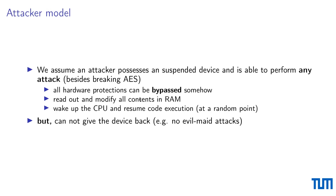Let's quickly recap our attacker model before going into the details of how FridgeLock is implemented. We assume an attacker who possesses a suspended device and is able to perform any attack besides breaking crypto. This also includes breaking all hardware protections that can be bypassed, so we do not rely on TPM or Intel SGX, which has been quite often exploited since the advent of Spectre in recent years. The attacker is not allowed to return the device — there are no evil maid bit attacks. If we allowed something like this, we would have other problems to solve.